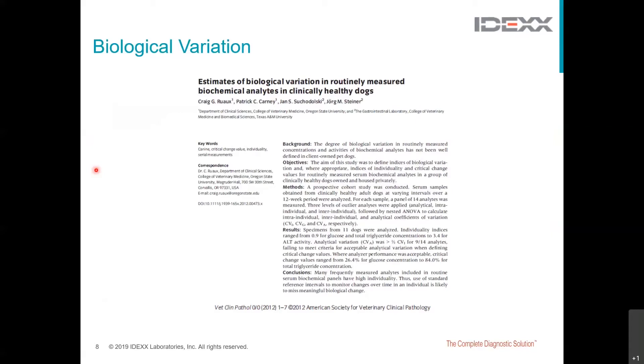Craig Ruo and colleagues at the College of Veterinary Medicine, Oregon State University, recognized that the degree of biological variation in routinely measured biochemical analytes had not been well-defined in client-owned pets. So they conducted a prospective study using a group of clinically healthy owned and privately housed dogs to estimate the biological variation in routinely measured biochemical analytes in clinically healthy dogs. The study population was 11 dogs of varying breeds, age, and sex. All dogs were considered clinically healthy on initial physical exam and based on lack of owner-reported signs of disease. None of the animals had any history of prior significant disease.